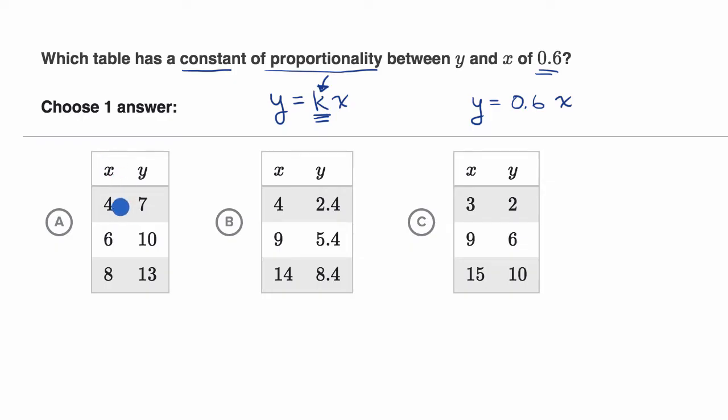So is seven 0.6 times four? Well, no, seven is larger than four. 0.6 times four would actually be 2.4. So this one is definitely not gonna have a constant of proportionality of 0.6.